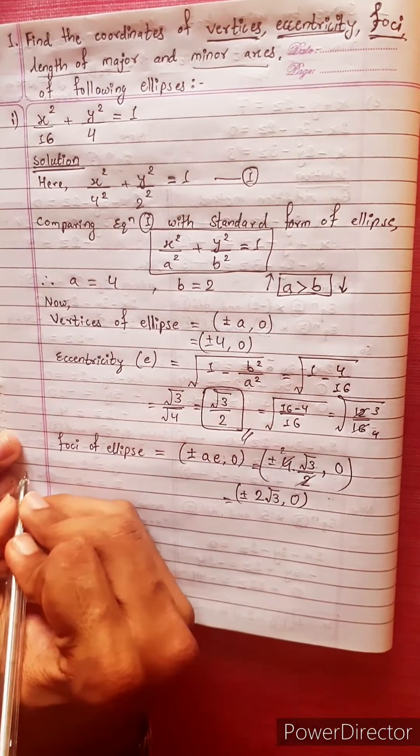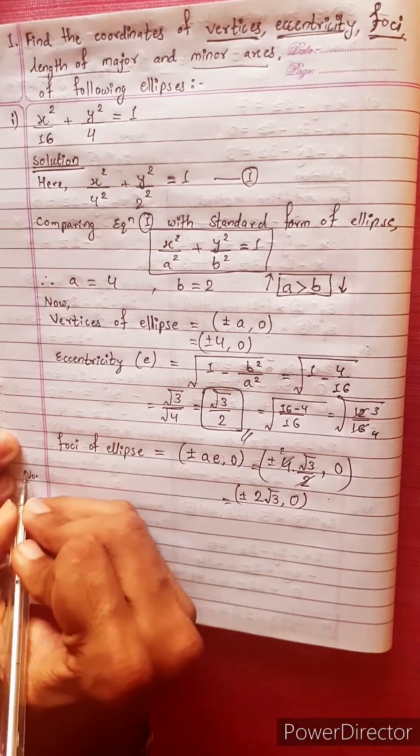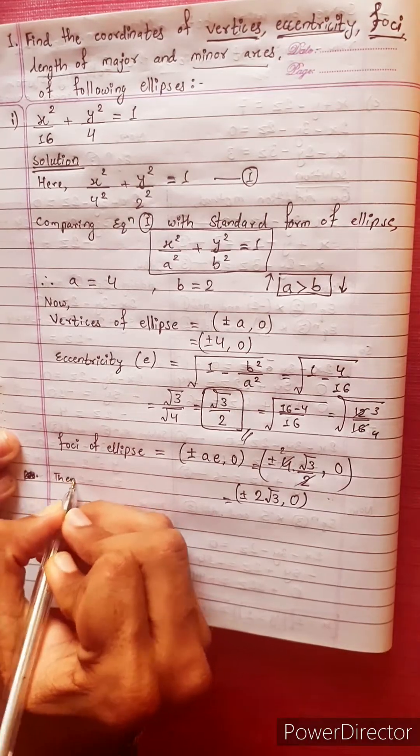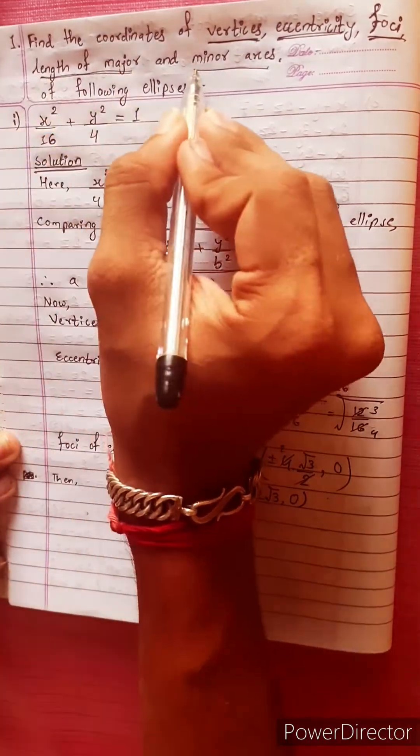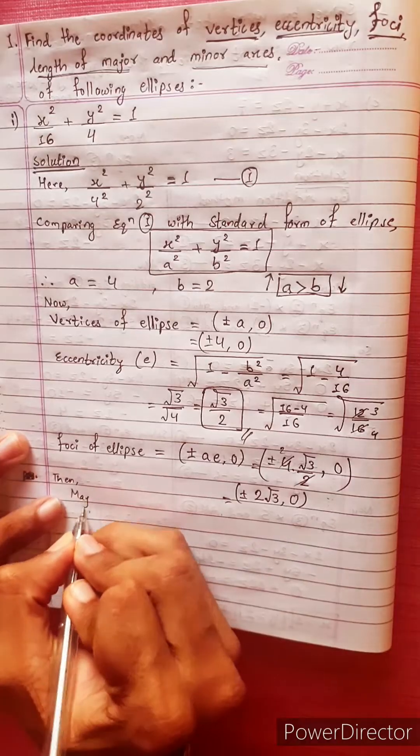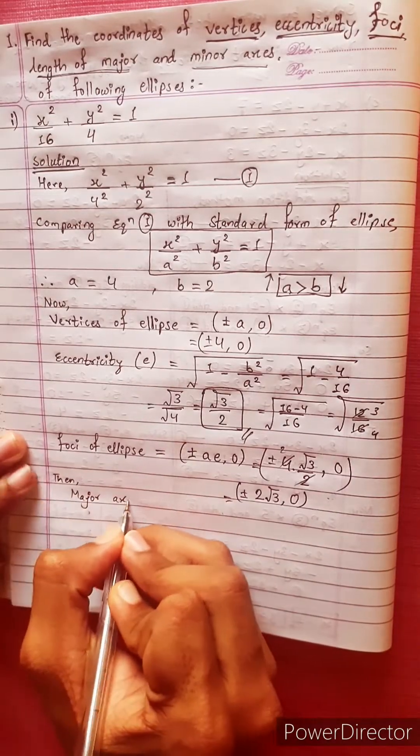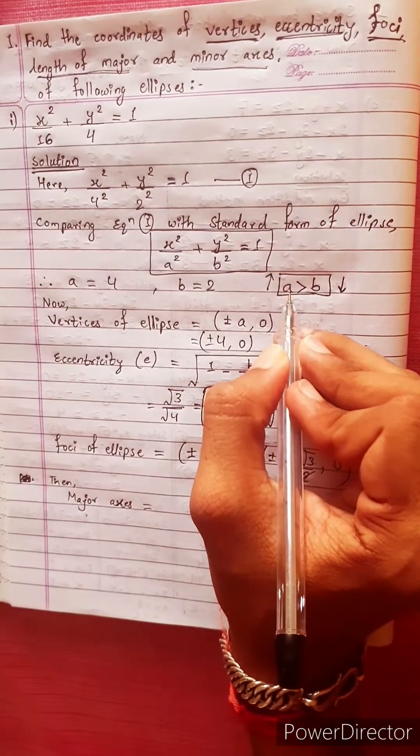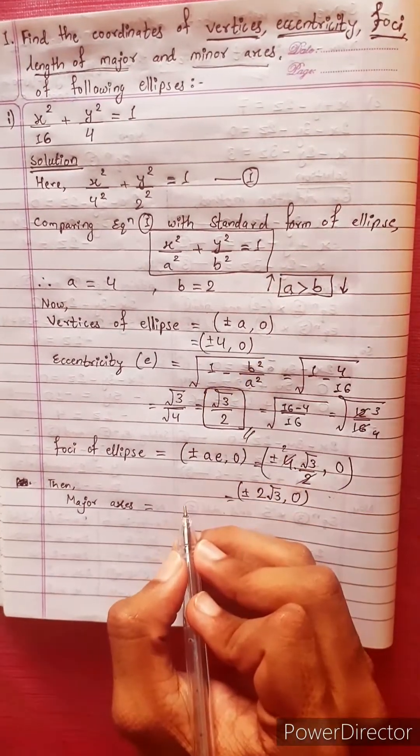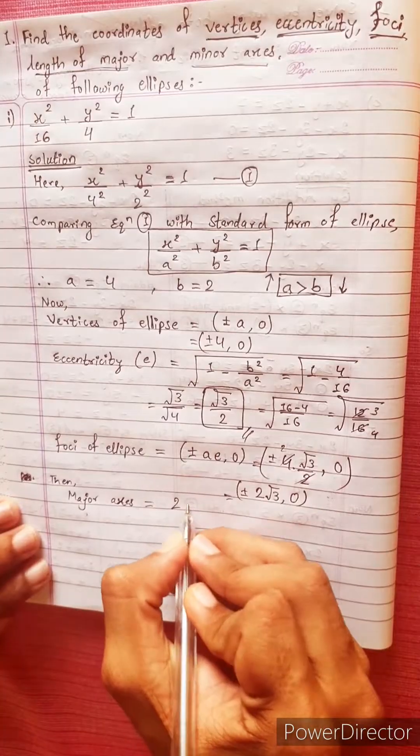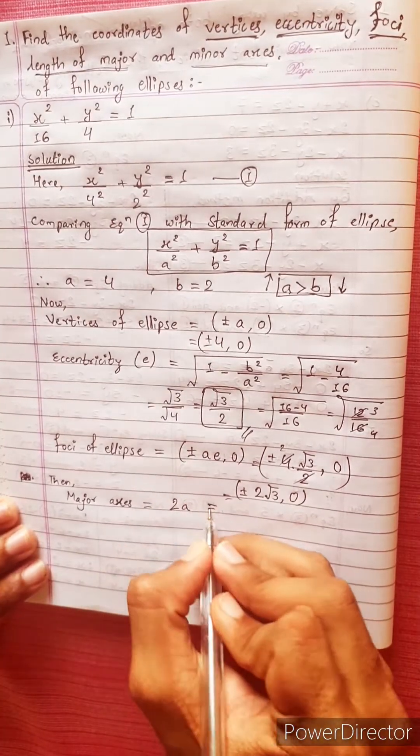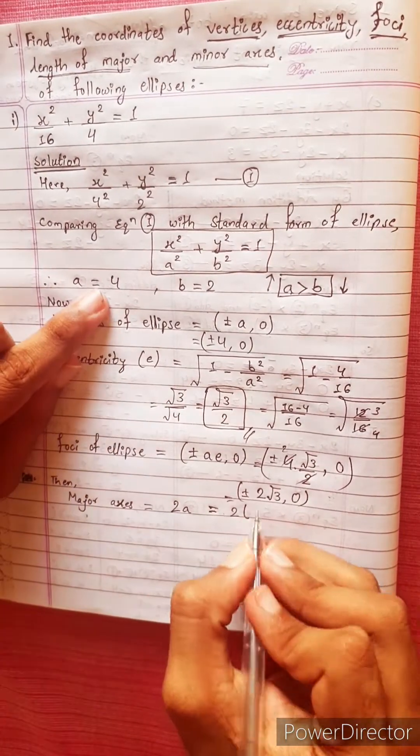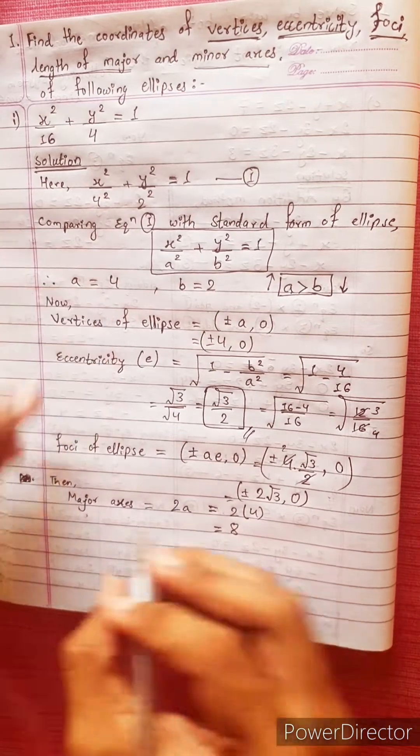Now, length of major axis. Since a is greater than b, the major axis equals 2a. 2 times a equals 2 times 4, equals to 8.